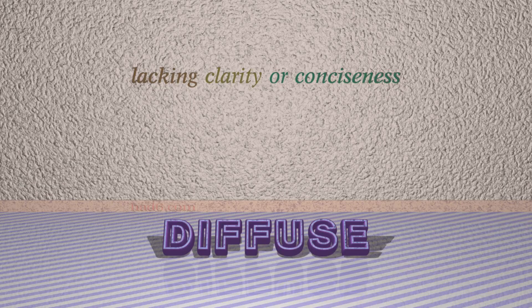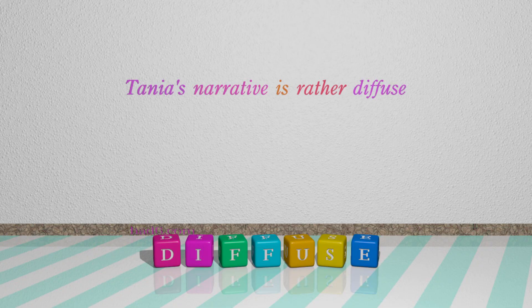Number 11: Diffuse. Which means lacking clarity or conciseness. For example: Tonya's narrative is rather diffuse.